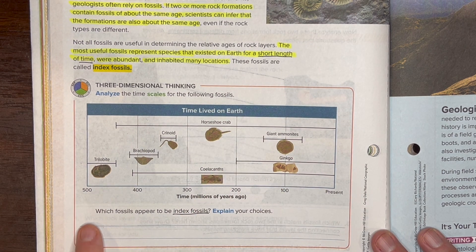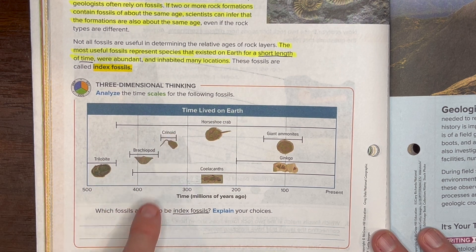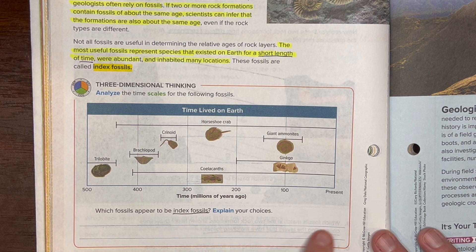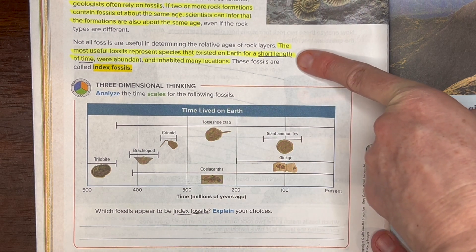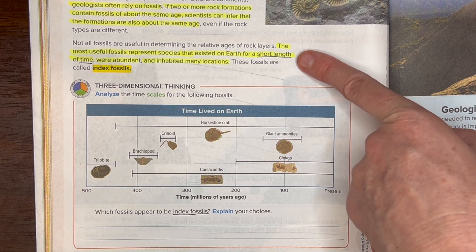So once again, let's write down trilobite, brachiopod, crinoid, and giant ammonites. And why are they such great index fossils? Because they only lived on Earth during a short period of time, so if we find them, we know when they lived and we know how old those rocks are.